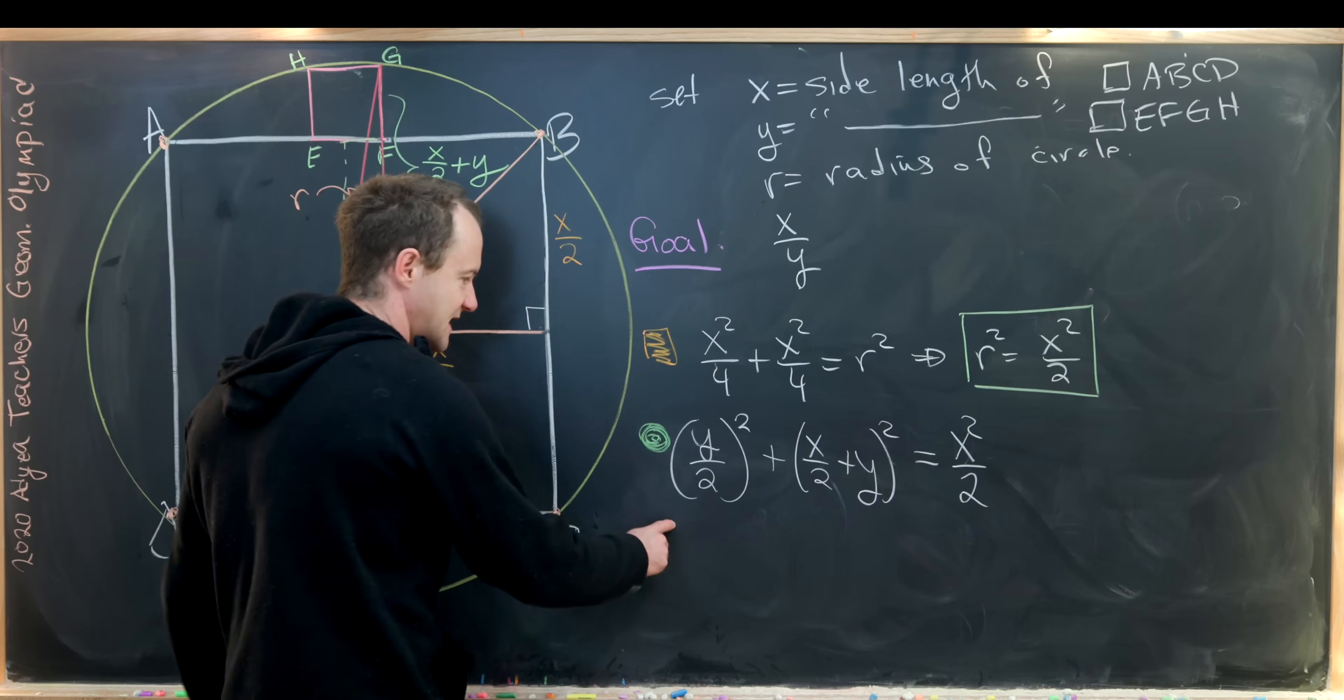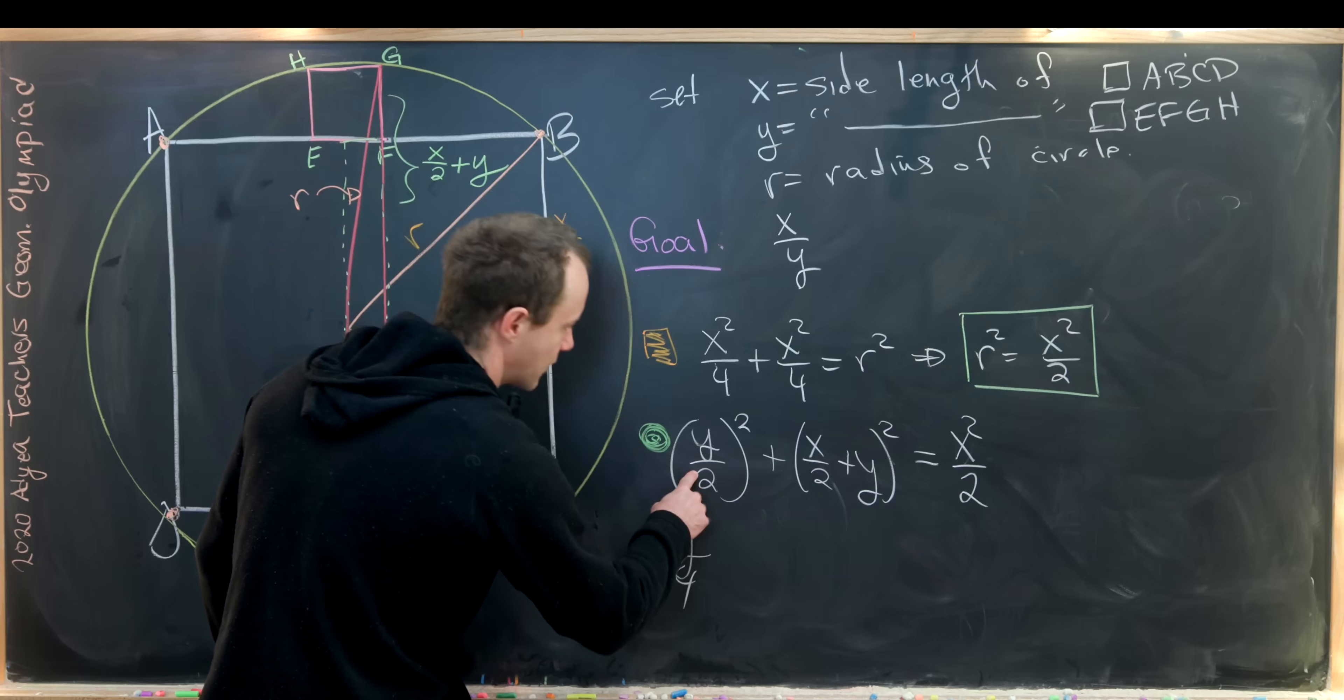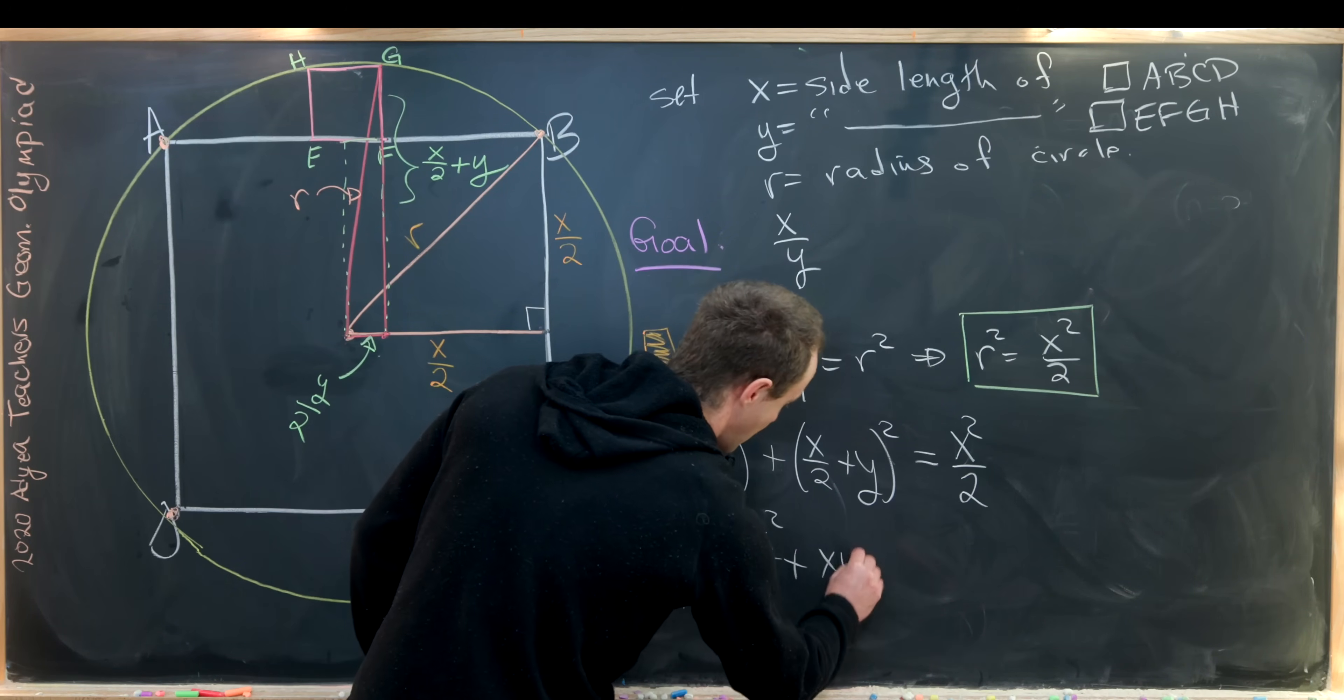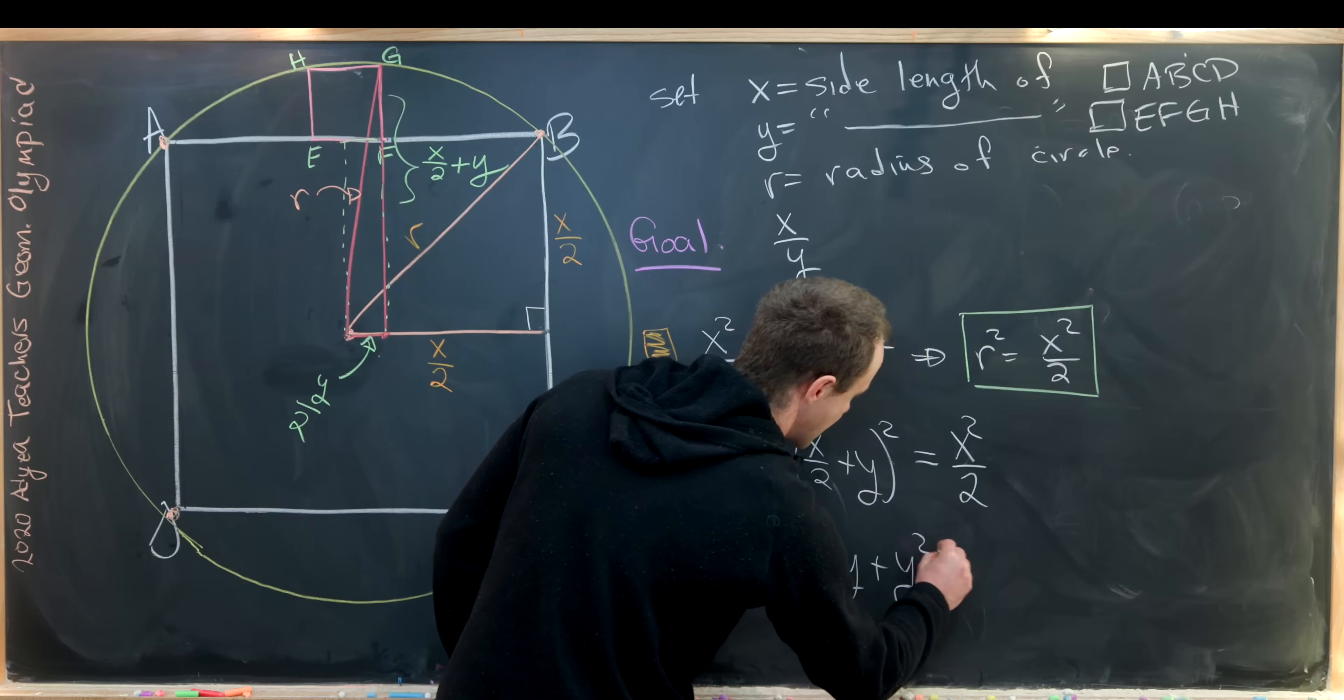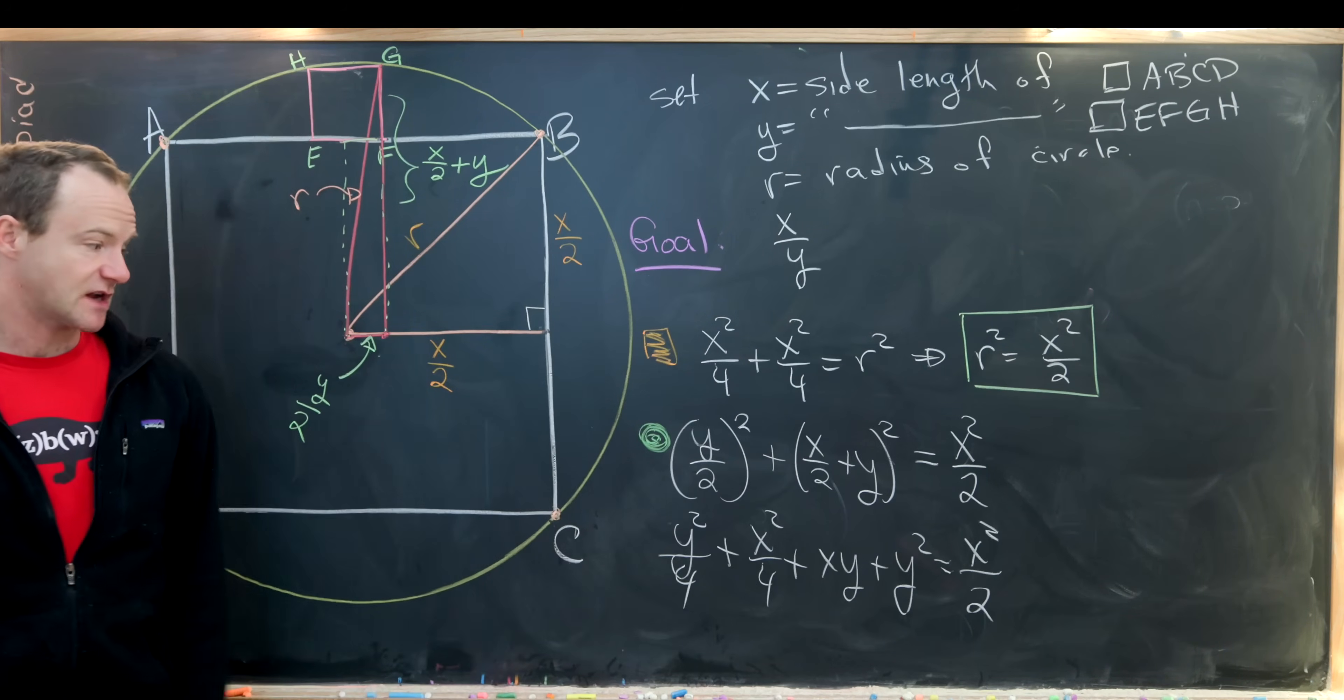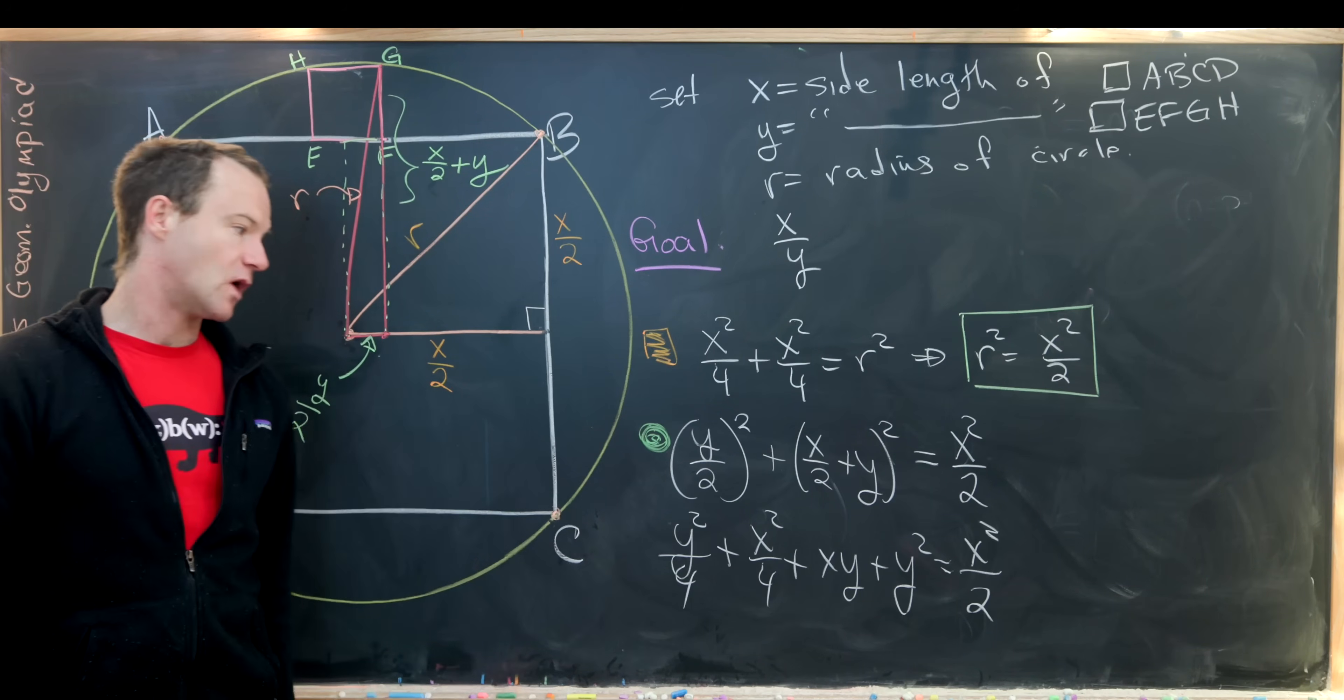Now let's multiply this out a little bit. Notice we'll get Y squared over 4 for this term plus X squared over 4 plus XY plus Y squared equals X squared over 2. So there's our relationship between X and Y in this quadratic equation.